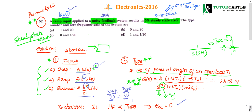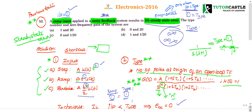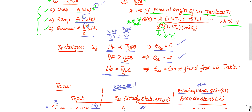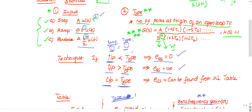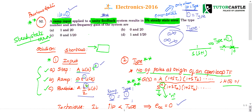The question states 5% steady state error — the error is neither 0 nor infinity, so some finite error exists. This means input and type must be equal. Since input = 1, the type must also be 1. By looking at the question directly, the type is 1, so we can eliminate options B and C, leaving options A or D.